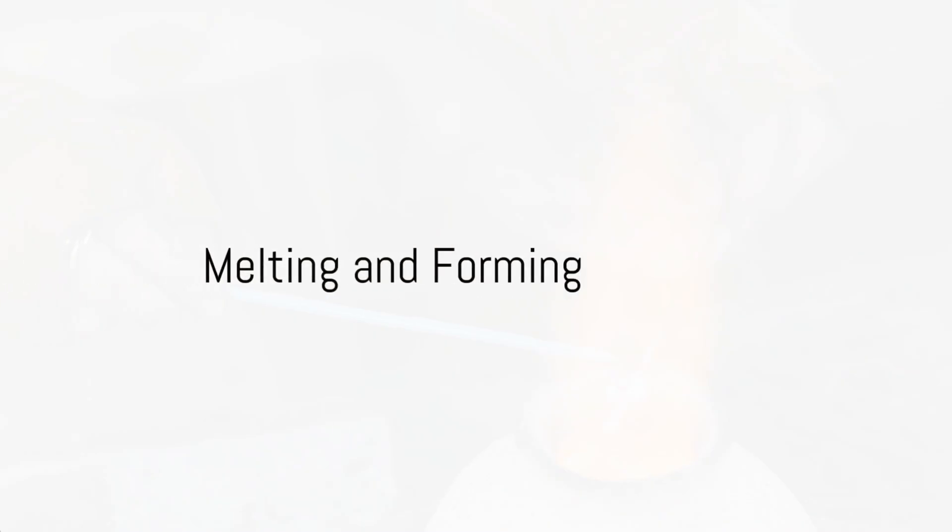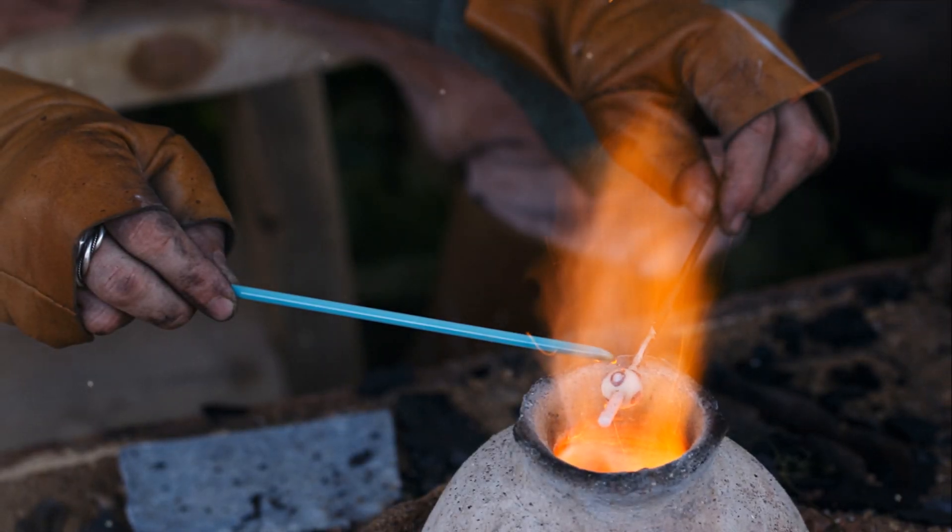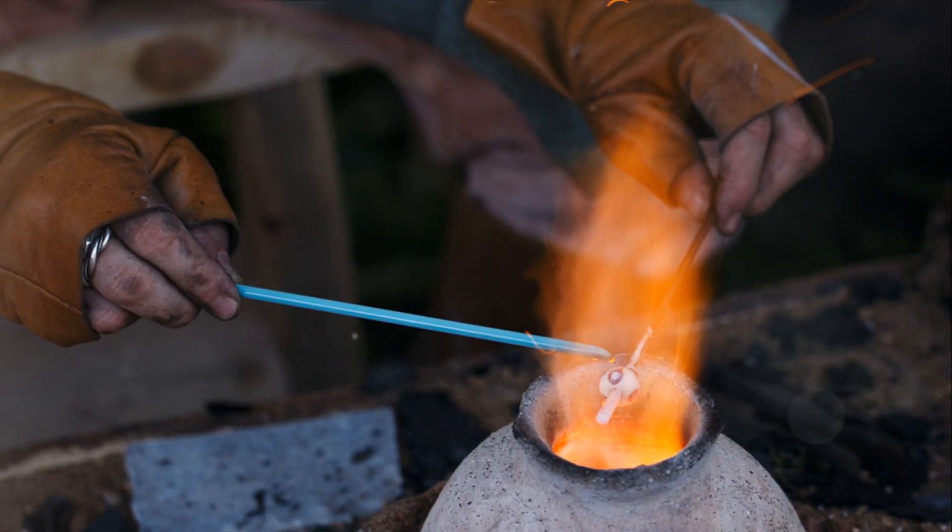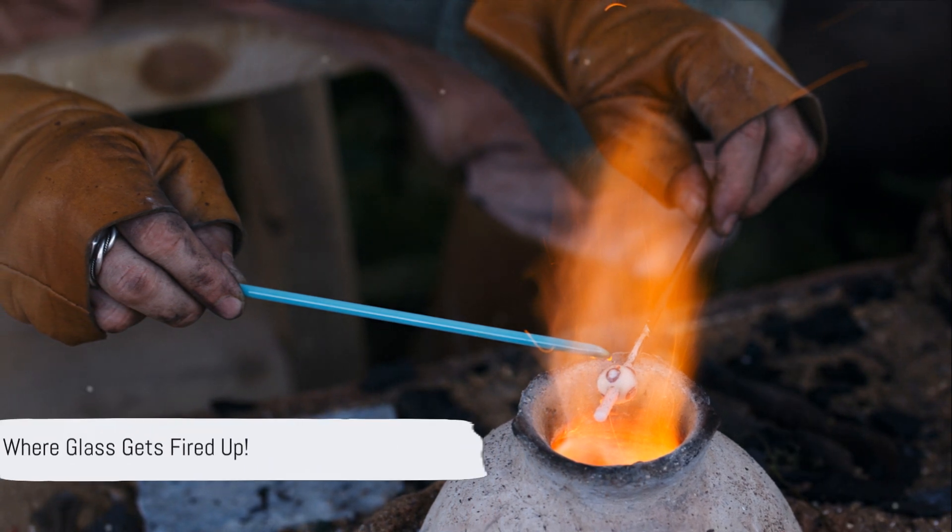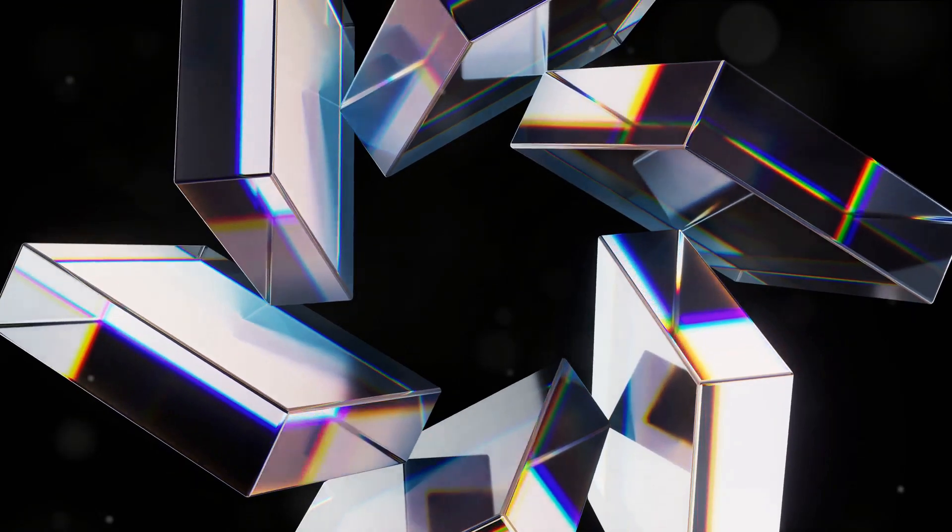Now it's time to crank up the heat. The mixture is melted at a staggering 2,000 degrees Fahrenheit in a furnace. Picture the world's most intense bake-off. This stage is called the hot end of glassmaking. And no, it's not because the glass is developing a summer tan.